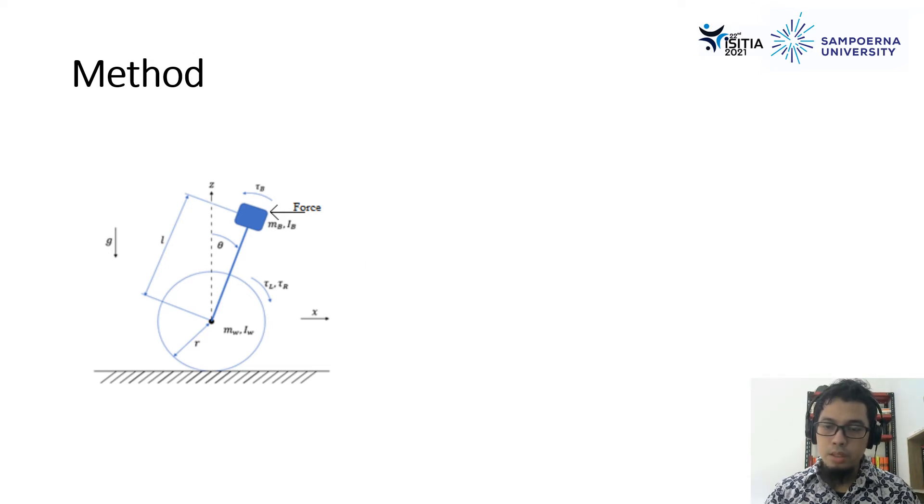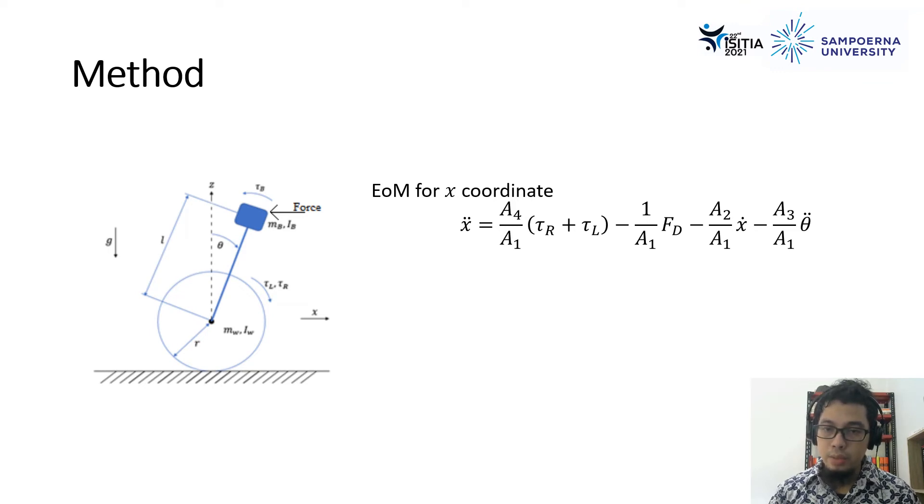From the categorization that we have from A1 until A8, then we can simplify the equations of the motion for the x-coordinate, where the x-double-dot is noted by these equations. And then, we can express these equations and put it into the theta-double-dot, where the simplifications becomes like this.